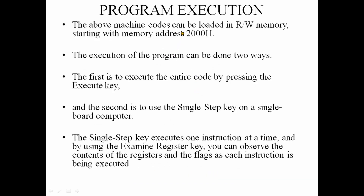We will load the machine code at address 2000H in read-write memory and execute it two ways. First, execute by pressing the execute key. Second, use the single-step key on the single-board computer to execute one instruction at a time, then examine the register and flag cell contents.